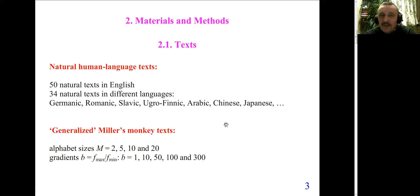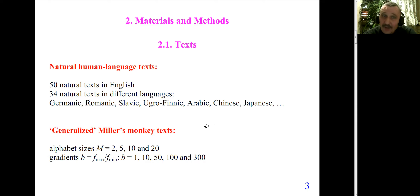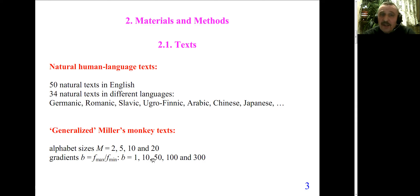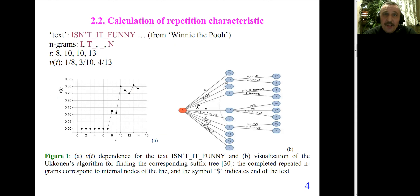We proceeded further and introduced so-called generalized Miller's monkey texts. A generalized text is also a random text, but the frequencies of different letters can be different. It is governed by a gradient b — the maximum frequency divided by the minimum frequency. For each alphabet size m of 2, 5, 10, and 20, we have studied a number of different gradient b values.